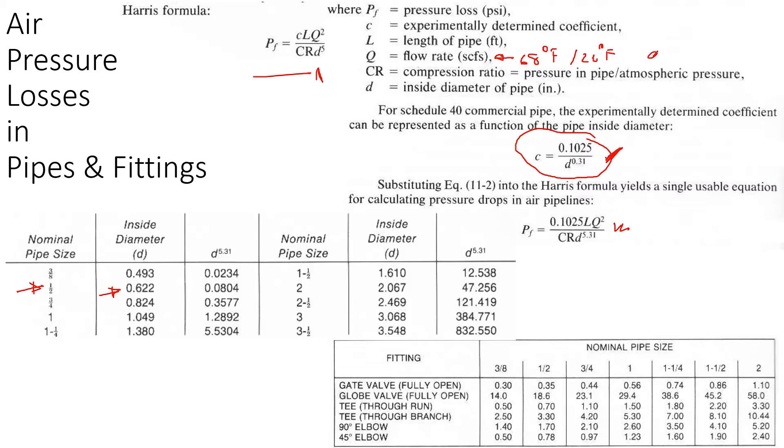CR is the compression ratio, which is the pressure inside the pipe divided by the atmospheric pressure. L is the length.